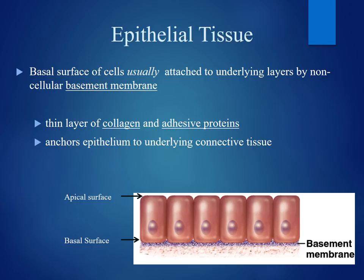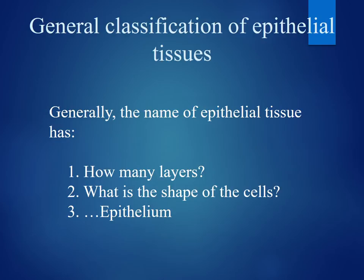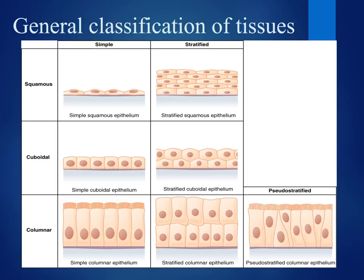In general, we're going to classify epithelial tissue based on three components. The first part of the name describes how many layers of cells there are. The second component describes the shape of the cells that make up the tissue. The third part indicates that it's epithelial tissue. In our lab, we're going to have three types of cells: squamous, which look like flat squished cells; cuboidal, which look like cube cells; and columnar, which look like columns.